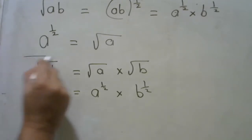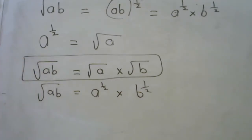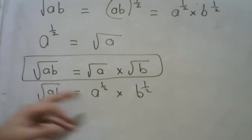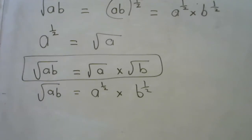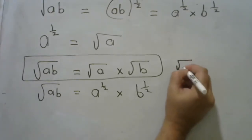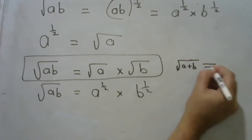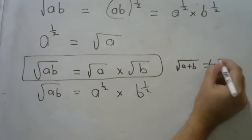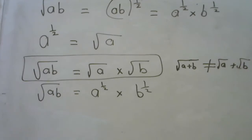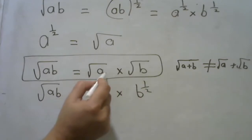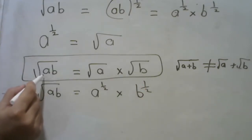Now, this holds. However, I want to make this point: root ab is the same as root a multiplied by root b. But root of a plus b is not equal to root a plus root b — not equal to. However, root a multiplied by root b is the same as root of ab.